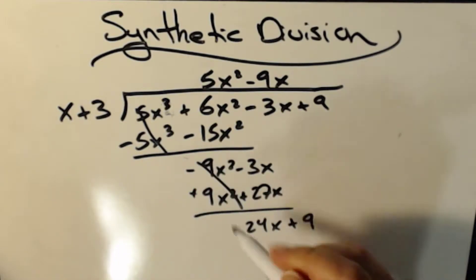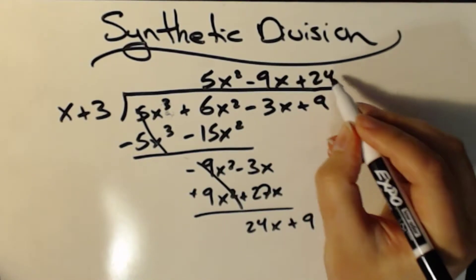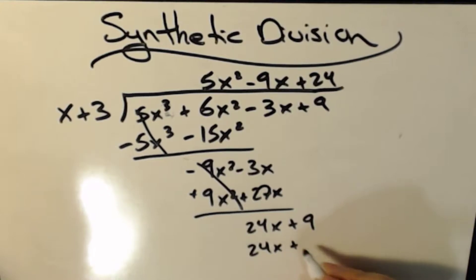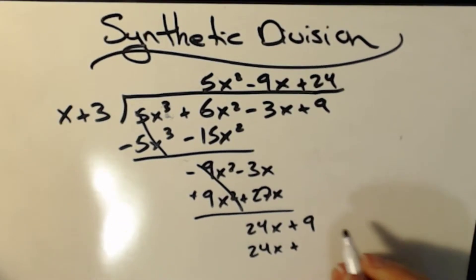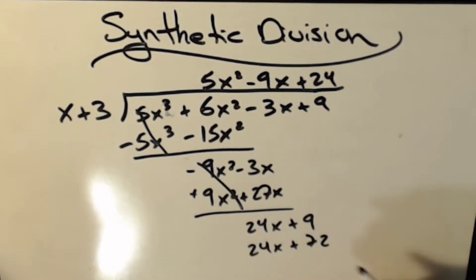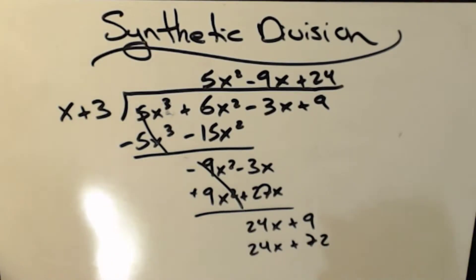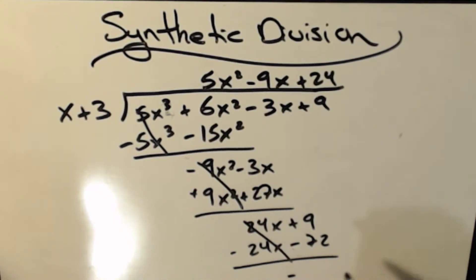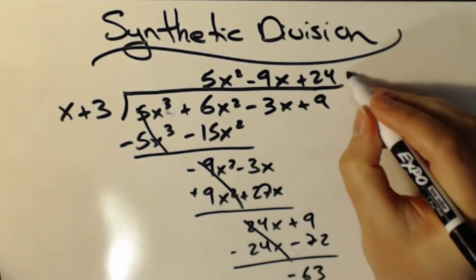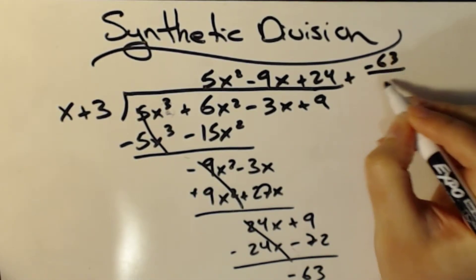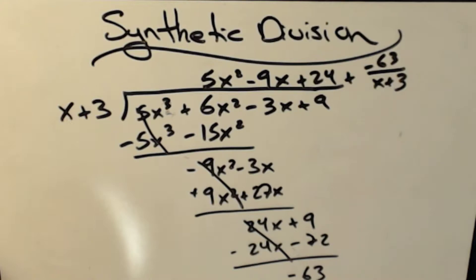Negative 9 times 3 would be negative 27x. Then I change my signs because I'm subtracting them. Those cancel. I get 24x. Bring down my 9 plus 9. Again, what do I multiply by 24? I get 24x plus 72. Subtract, subtract, cancel. I'm going to get negative 63.